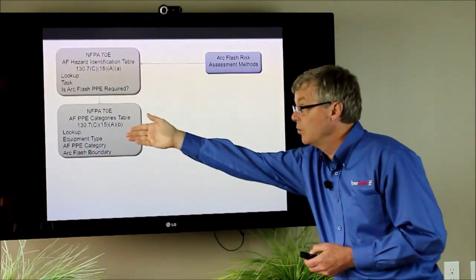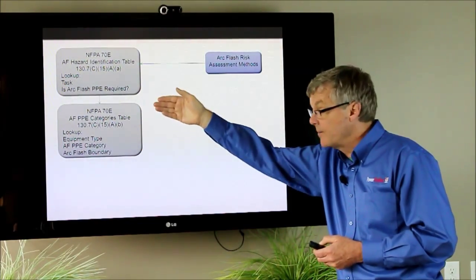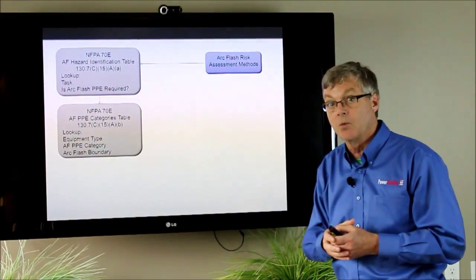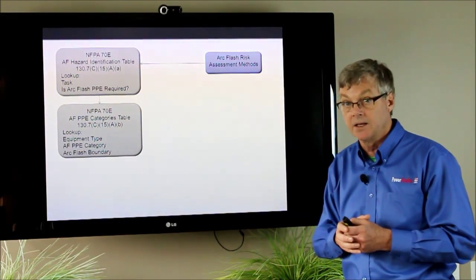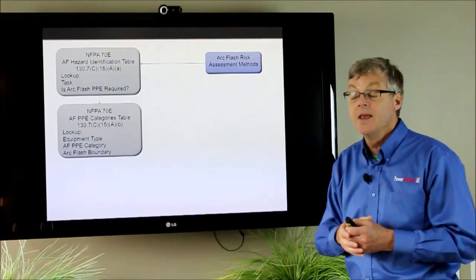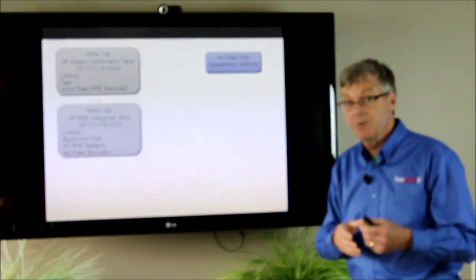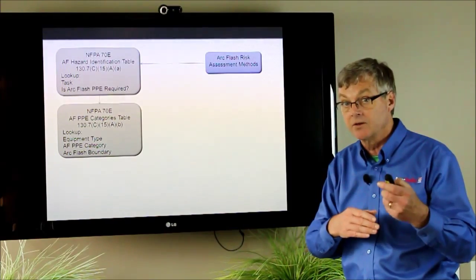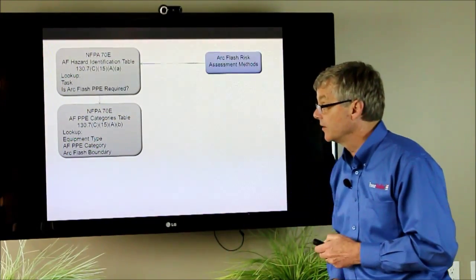And this only works though if you adhere to the table limits because at each piece of equipment they'll specify what the maximum short circuit rating is or available fault current and what the maximum tripping time has to be. If you exceed any one of those values, short circuit or tripping time, you can't use this method.